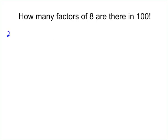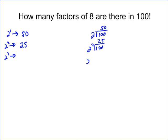Using the same method: 2 to the first goes into 100 fifty times; 2 to the second goes into 100 twenty-five times; 2 to the third is 8, which goes into 100 twelve times (since 8×12=96); and 2 to the fourth is 16, which goes into 100 six times (16×6=96). Remainders are ignored throughout.